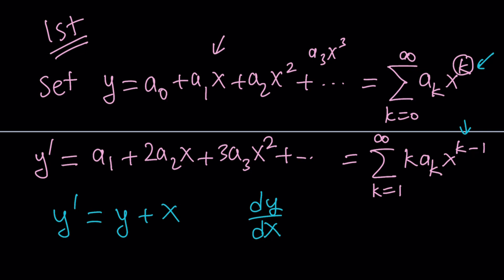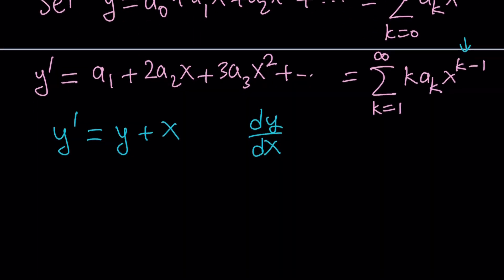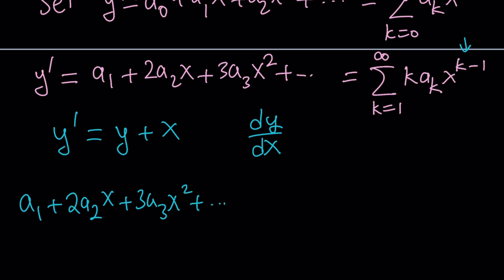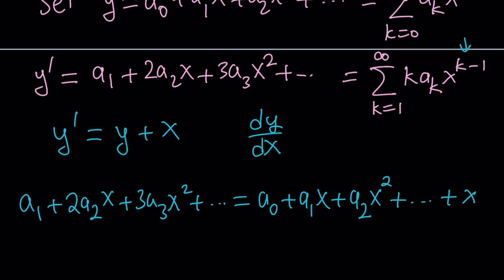We replace y prime with a sub 1 plus 2 a sub 2 x plus 3 a sub 3 x squared, continuing forever. That equals y, which is a sub 0 plus a sub 1 x plus a sub 2 x squared, and so on. Notice we're also adding an x here, so we have a sub 1 x plus an additional x, which brings things to a different level.